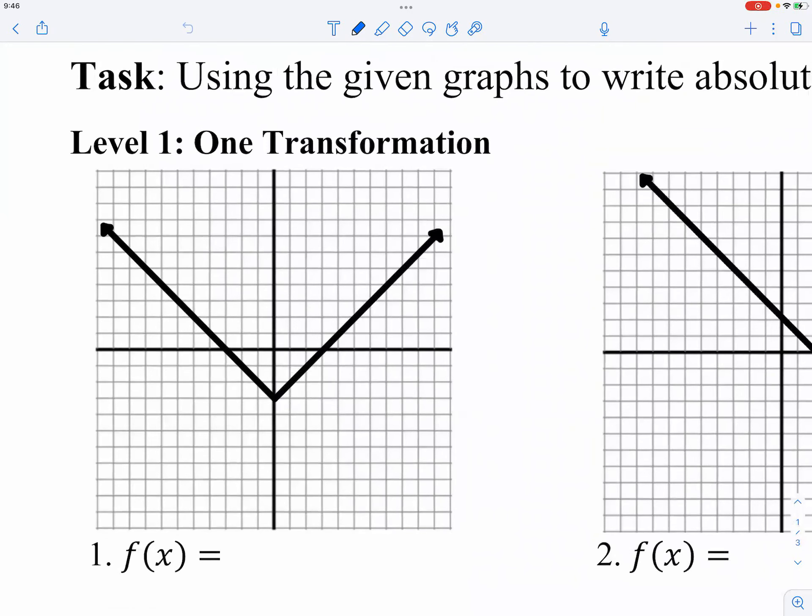So this one is just shifting down three units. That means our equation must be absolute value of x and then minus three. Yeah, 1, 2, 3, right, shifting down three units. If the printing quality is bad on the paper, that's very understandable, but the main point is to get the idea that it's shifting down.